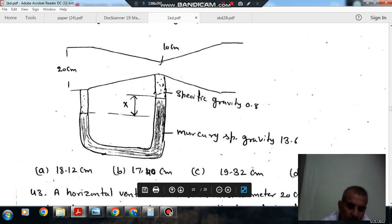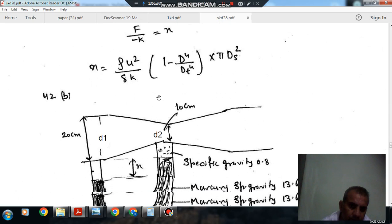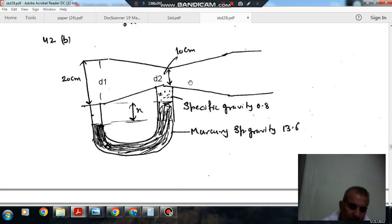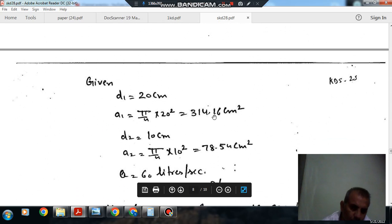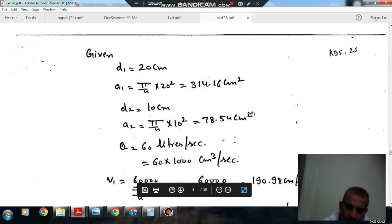So this is 20 cm, this is 10 cm, this is your oil of specific gravity 0.8. This is mercury of specific gravity 13.6. Here the D1 is 20 cm, D2 is 10 cm. So area A1 and A2 are 314.16 cm square and 78.54 cm square.